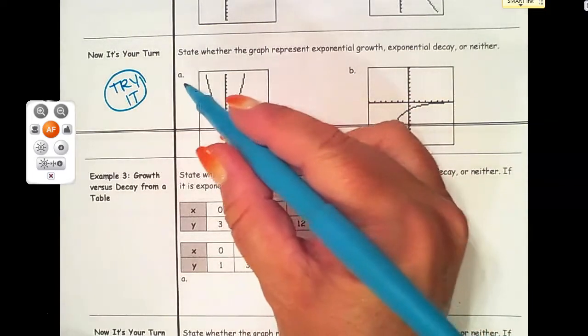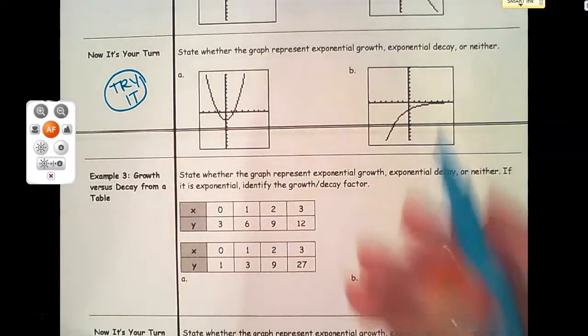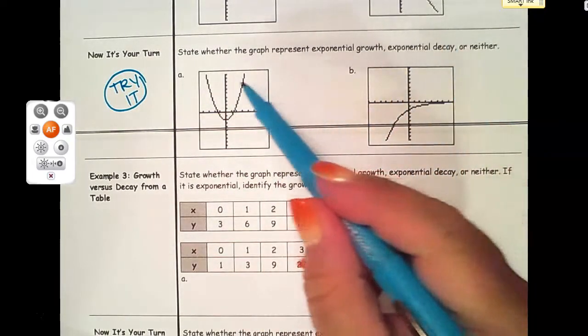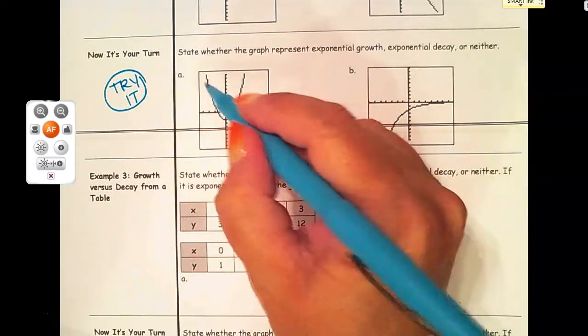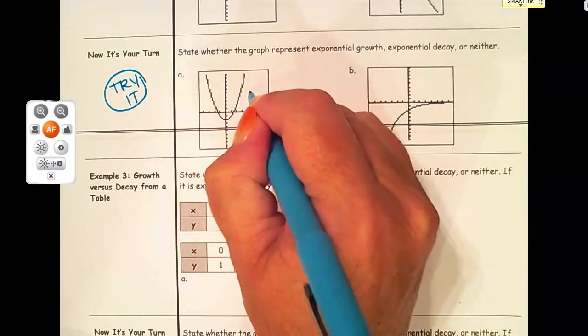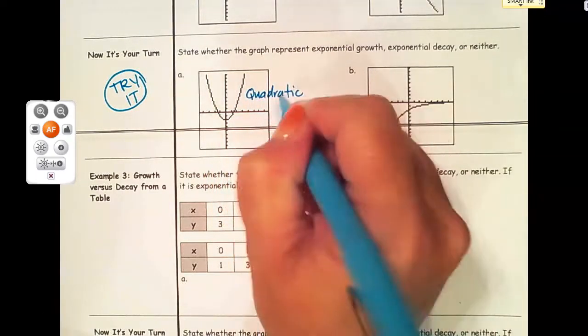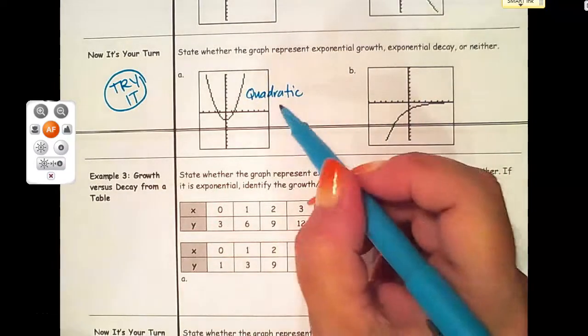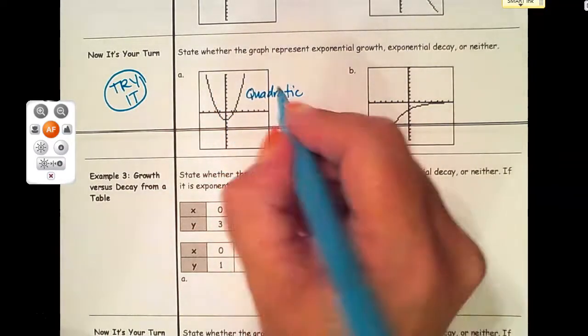Looking at letter a, hopefully you paused and put your own conjectures there. Letter a is not an exponentially shaped graph. In fact, this is one you've seen at the beginning of class - it's a quadratic graph. We're going to be studying those very soon, but it's definitely not exponential, so that would be neither.